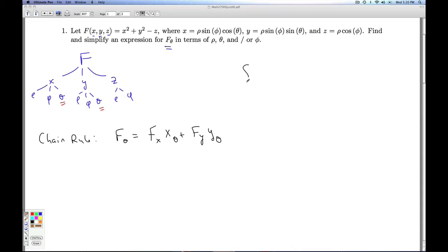Now it's just a matter of working all this out. So let's find the f_x, partial derivative with respect to x. f_y, partial derivative with respect to y. Let's look at x_theta. Here's x, partial derivative with respect to theta. The rho, sine phi are treated as constants. I take the derivative of cosine of theta. I'm going to get negative sine of theta.